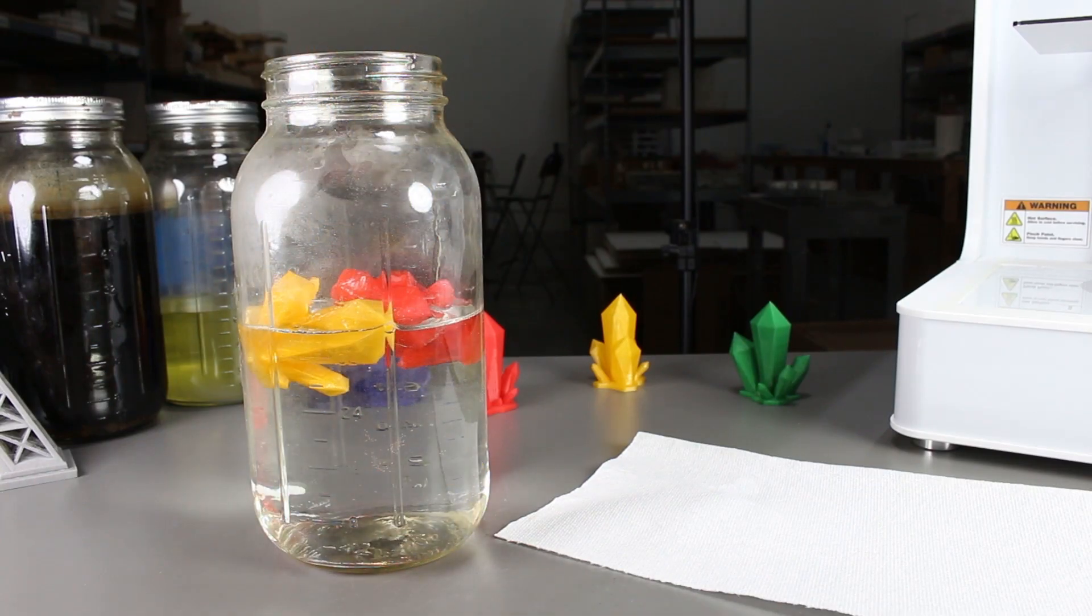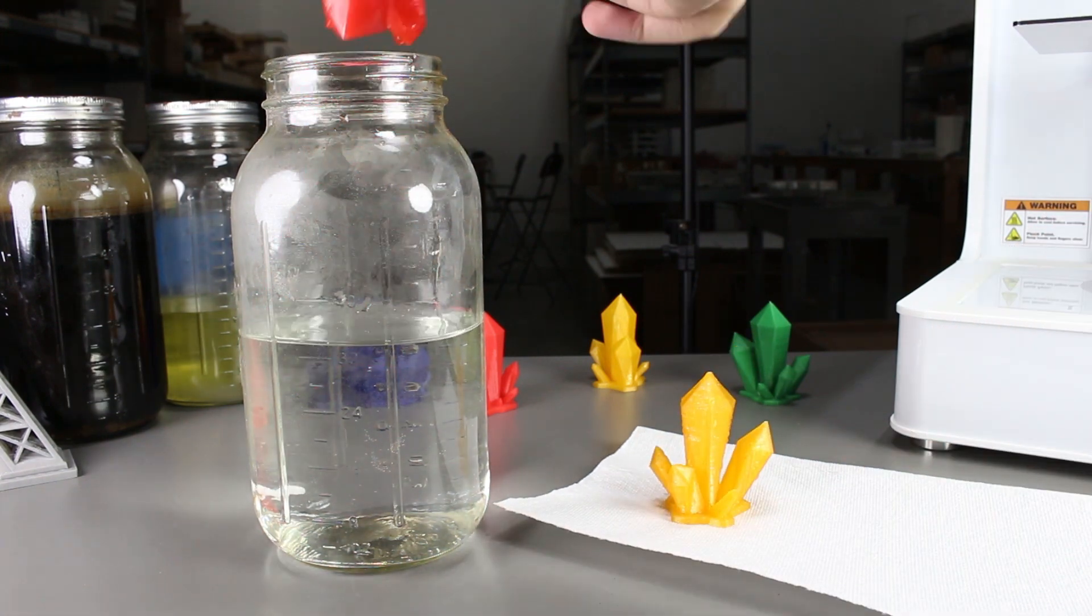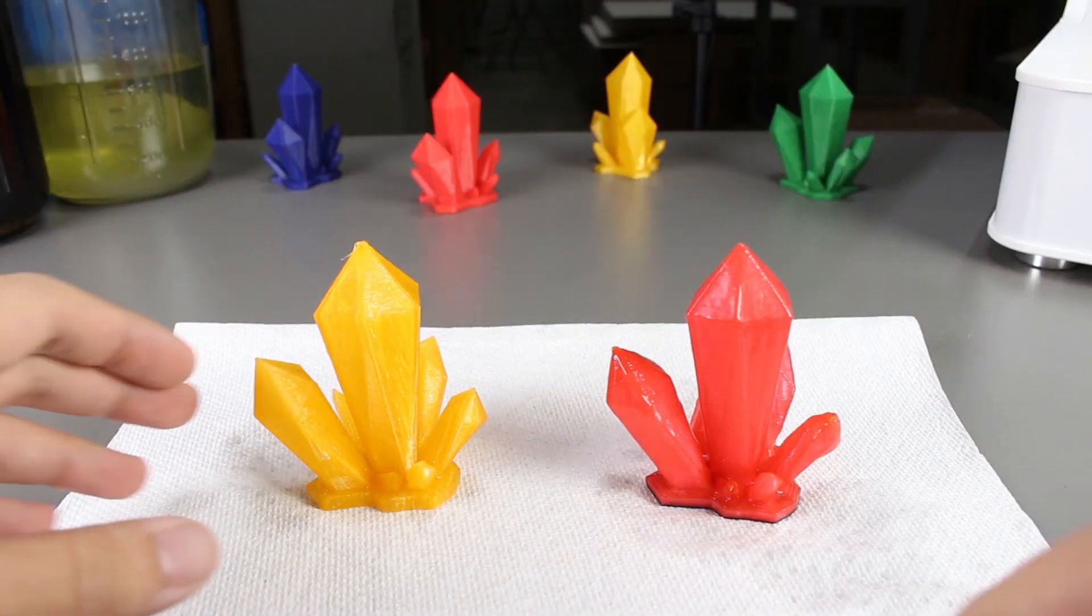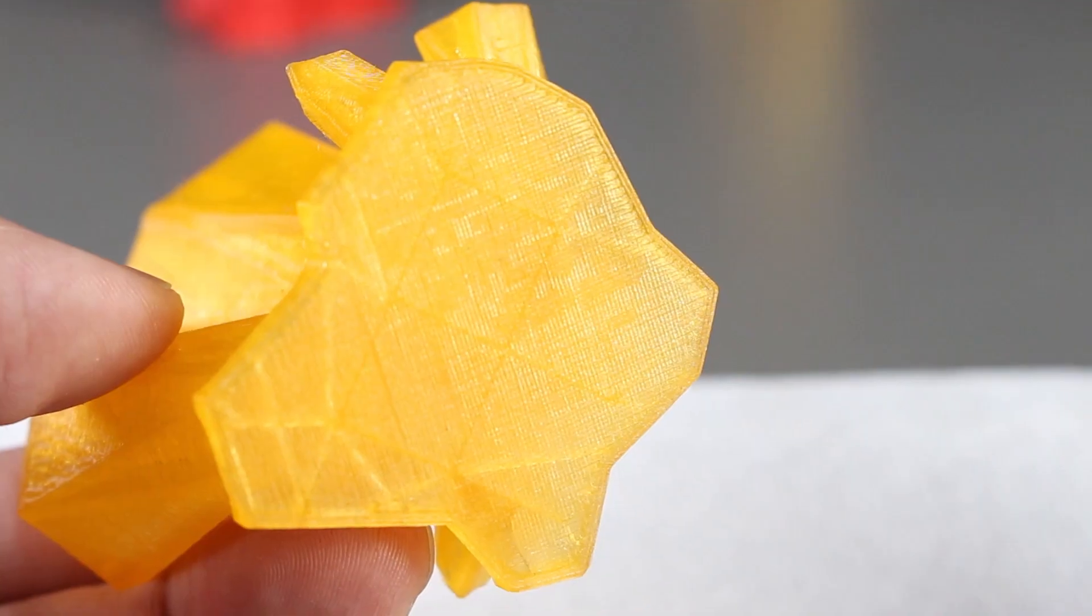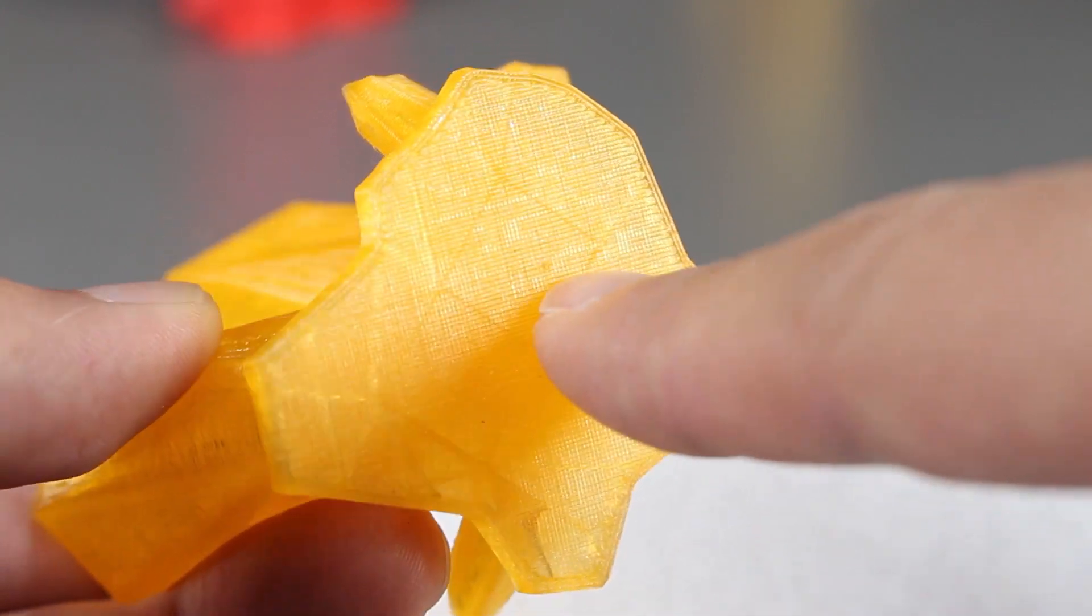I left it inside the water overnight, so let's take a look at them. We'll take a look at the yellow gem first as it was not heat treated so we can actually see whether or not any water seeped into the print.